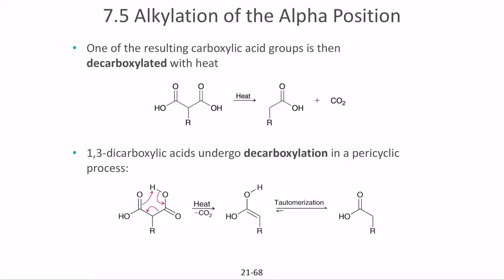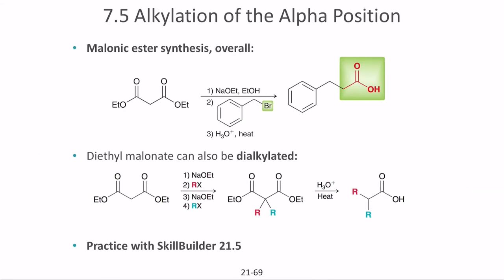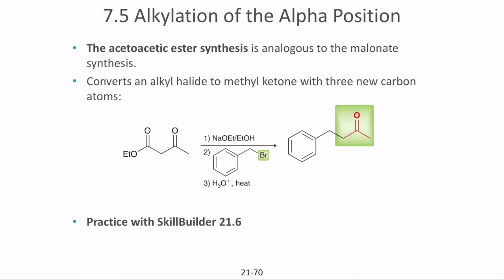One of the resulting carboxylic acid groups undergoes decarboxylation — removal of carbon dioxide — to give a monosubstituted carboxylic acid. The most common compounds to undergo decarboxylation are 1,3-dicarboxylic acids, which do so readily via a pericyclic process. Overall, malonic ester synthesis removes the alkyl halide's leaving group and adds two additional carbons (beyond the carboxylic acid carbon) to the structure.